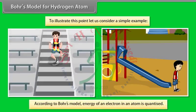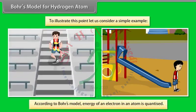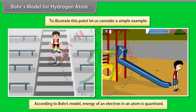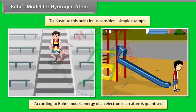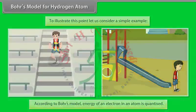So, according to Bohr's model, energy of an electron in an atom is quantized.